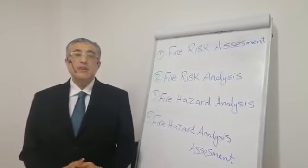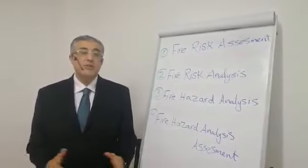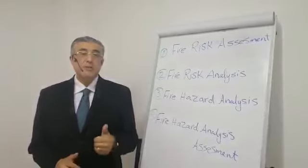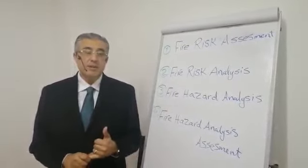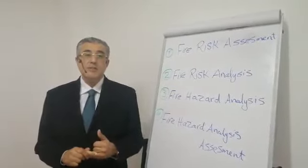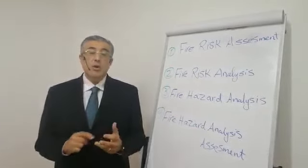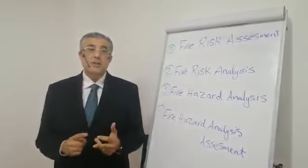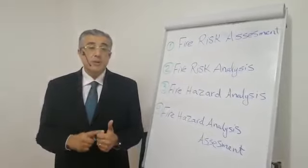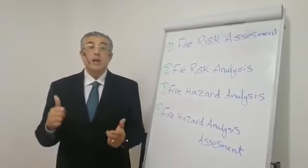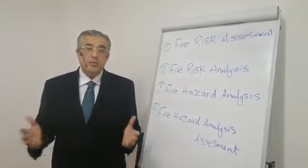These topics concern the two safety business partners of any organization. Partner number one is the organization safety team. Partner number two is the organization stakeholders, like owners and investors, like insurers, regulators, employees, workers, tenants, community, and so on.